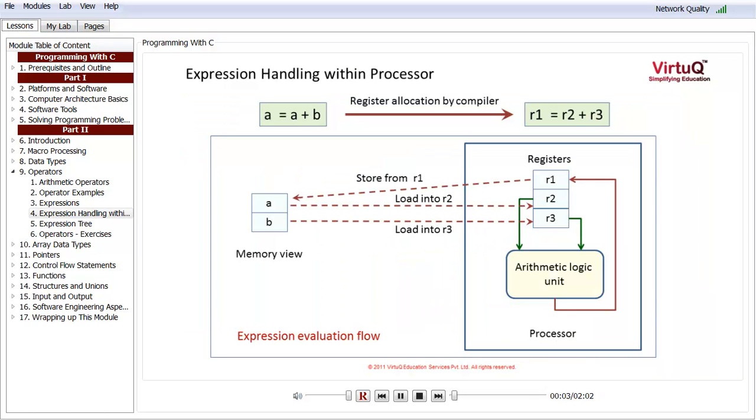This slide shows the expression evaluation flow inside a processor. We have taken a very typical expression a equals a plus b. To a first time programmer, this particular expression evaluation can at times be quite confusing. The reason being that mathematically a can never be equal to a plus b, until and unless b equals 0. Whereas, this is a very commonly used expression in programs. What is really happening here is that the assignment to a happens after the values of a and b have been used. Let's just see an example as to how this is happening.